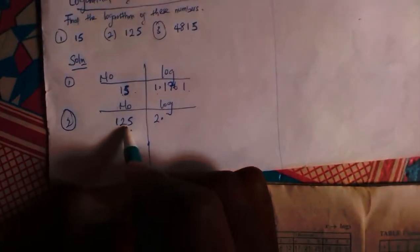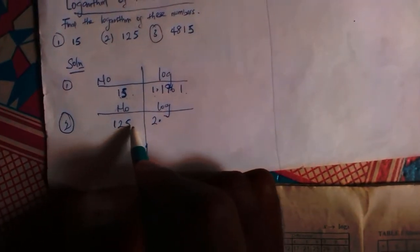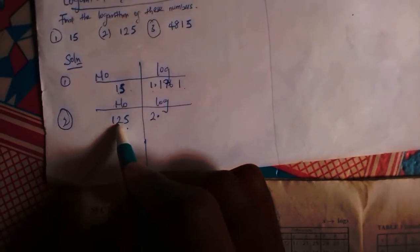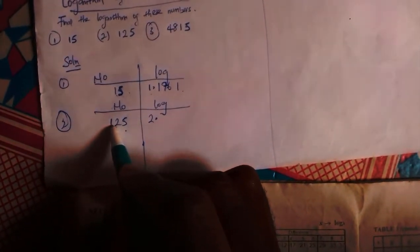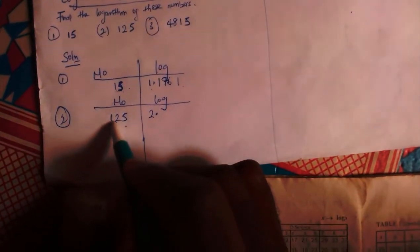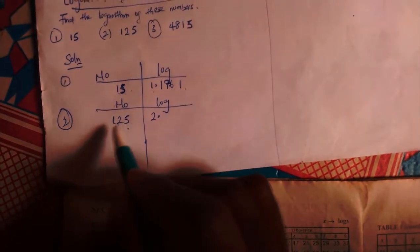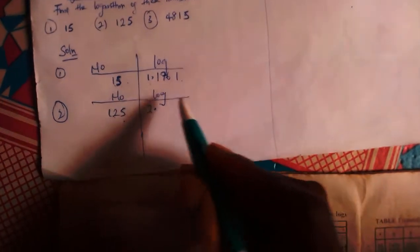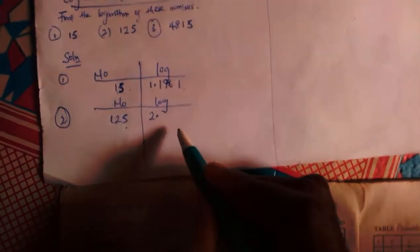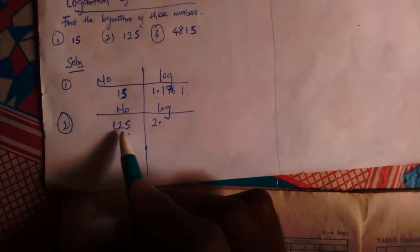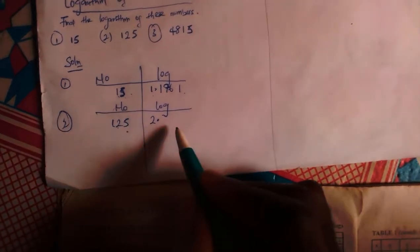Because this is 125, it is not 12.5, it is not 1.25. If it was 1.25, the characteristic there is going to be 0 points. Why? Because the number of numbers before the decimal is 1, so 1 minus 1 is 0. But in this case this is 3, which is 2 points. That is my characteristic.